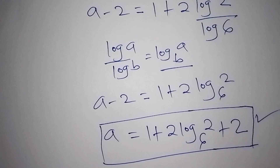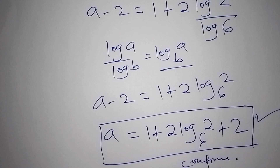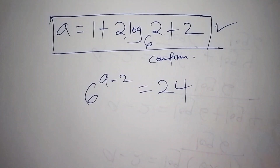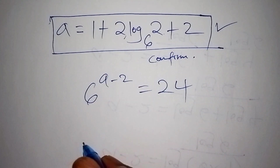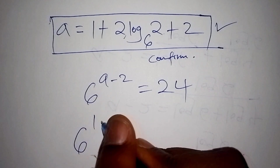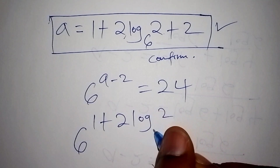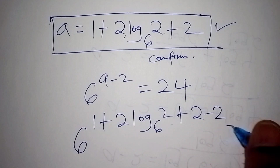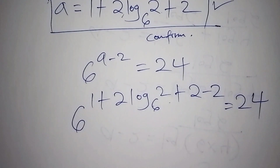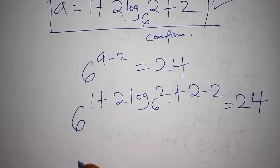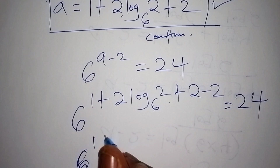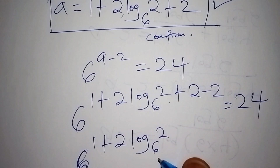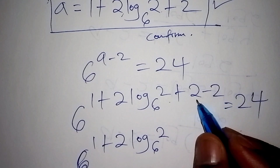I want us to confirm this answer and check if it is really true. Our initial problem was 6 to the power of a minus 2 equals 24. Substituting a, we have 6 to the power of (1 plus 2·log₆2 plus 2) minus 2. The 2 and minus 2 cancel, leaving 6 to the power of 1 plus 2·log₆2.